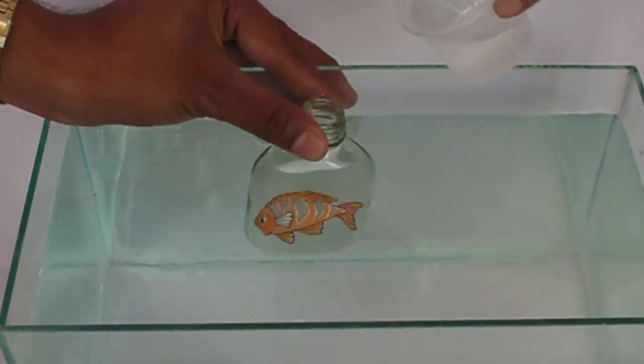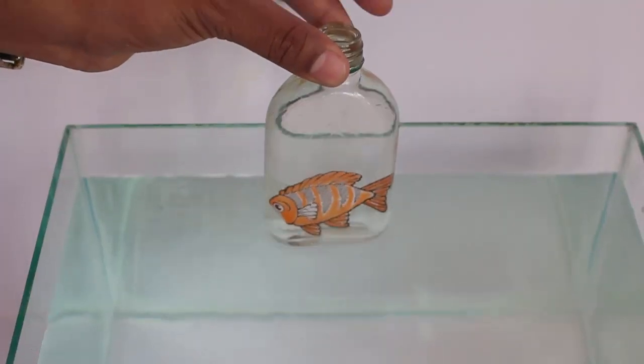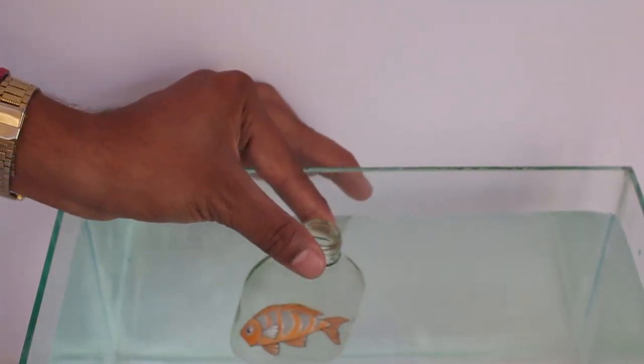Now as you dip the bottle and fill it with water, because there is water both inside and outside the bottle, the fish reappears.